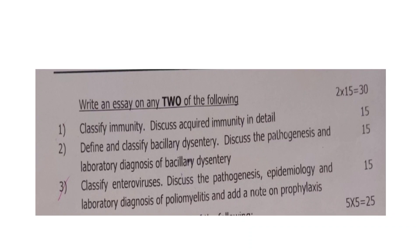First, write an essay on any 2 of the following 3 questions, 2 into 15 equals 30 marks. First question: classify immunity and discuss acquired immunity in detail. Second question: define and classify bacillary dysentery, discuss the pathogenesis and laboratory diagnosis of bacillary dysentery. Third question: classify enterovirus, discuss the pathogenesis, epidemiology and laboratory diagnosis of poliomyelitis, and add a note on its prophylaxis.